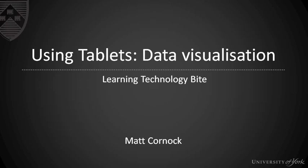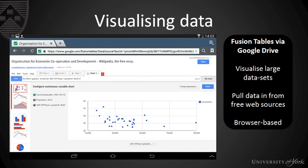Data visualization is a way of presenting complex data — for example, a series of spreadsheets with lots of different data, perhaps country-based data — in a more accessible way. The tool we're going to be using here is called Fusion Tables, which is available as an add-on to Google Drive, and it allows you to visualize large data sets by pulling data in from free web sources.